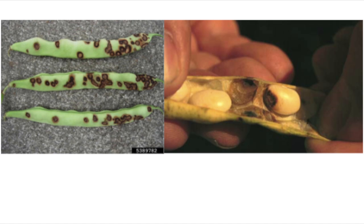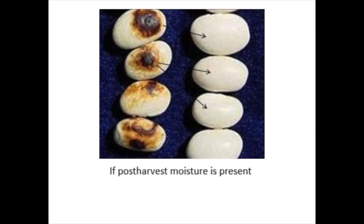The most obvious symptom of disease is the reddish-brown blemishes that appear on beans and pods. If these get wet post-harvest, the fungus produces more pink spores that can spread throughout the batch.